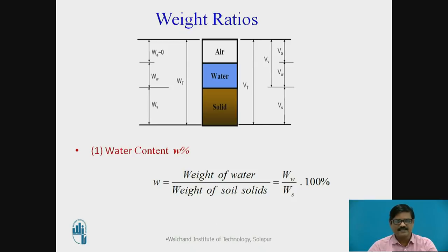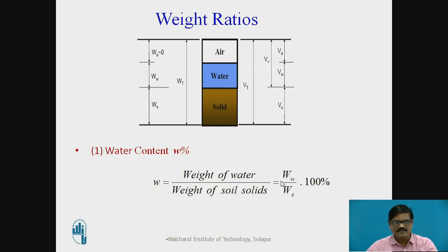In the earlier slides, we discussed volumetric ratios. Now let us go to weight ratios. In connection with weight ratios, we have a property called water content of the soil. Water content is the ratio of weight of water to the weight of soil solid — mathematically expressed as Ww upon Ws. We can see in the figure weight of water divided by weight of soil solid gives water content. Weight of soil solid is the weight of dry soil, so water content is also expressed as weight of water divided by weight of dry soil.